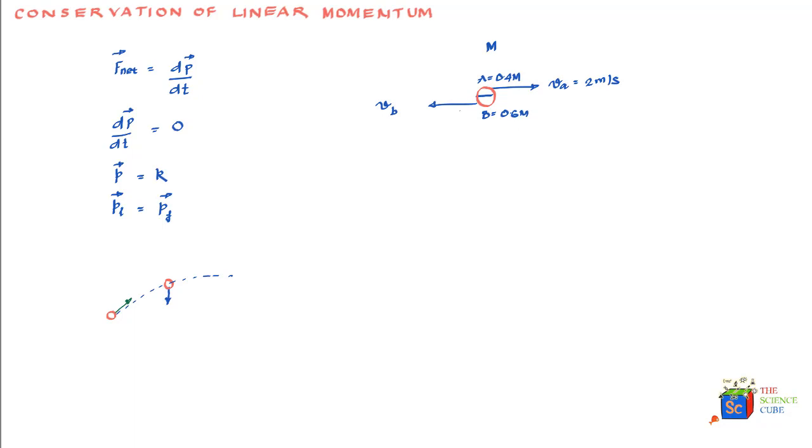We can say that the linear momentum in the x direction should remain conserved, primarily because the bomb exploded on account of internal forces only and there was no external force exerted on the bomb. We'll write the equation that the linear momentum in the x direction initial should equal linear momentum in the x direction final.